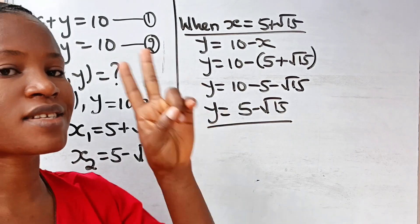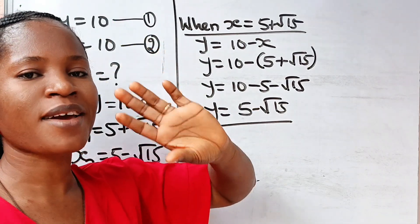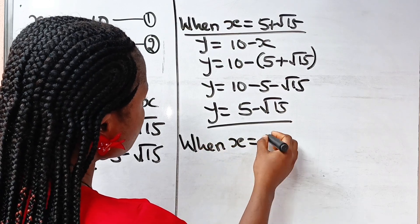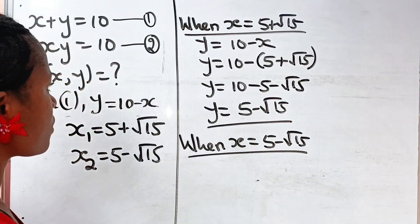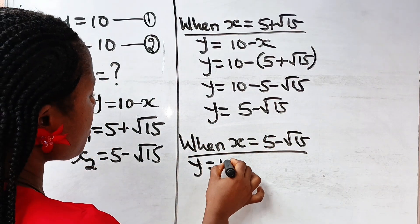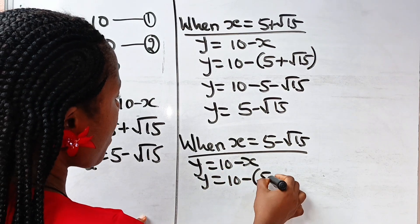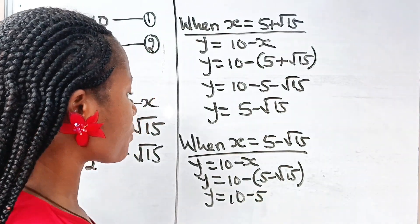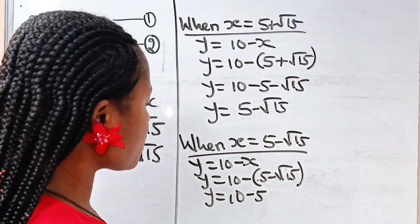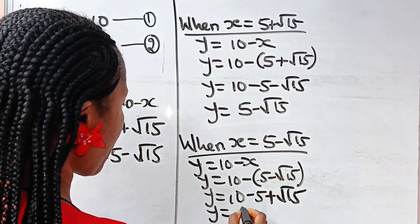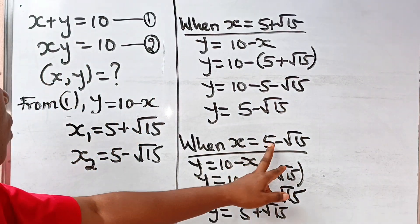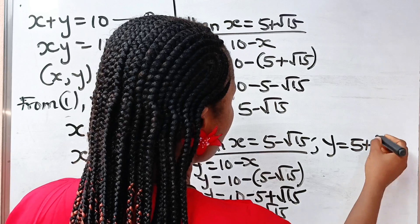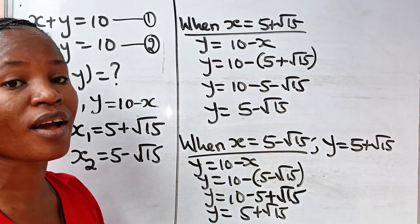Now for the second case — and we are going to prove that the answer we got is correct, so I would like you to watch to the end. When x is equal to 5 minus root 15, then y is 10 minus x, so y is 10 minus (5 minus root 15). That gives us 10 minus 5 — and minus times minus is plus — so we have plus root 15. Therefore y is equal to 5 plus root 15.